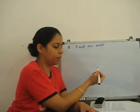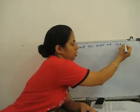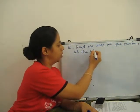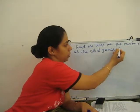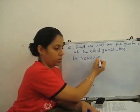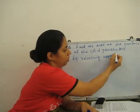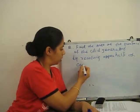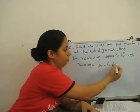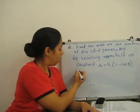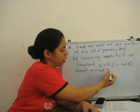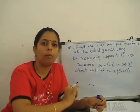The surface area of the solid generated by revolving the upper half of the cardioid, where r = A(1 - cosθ), about the initial line. The initial line is θ = 0, so we have to revolve about the initial line.